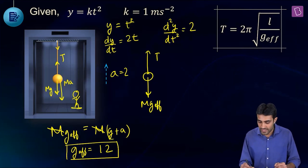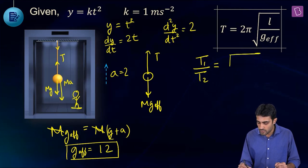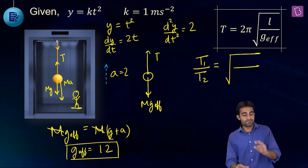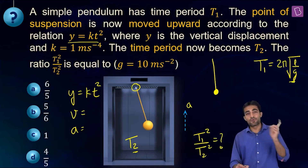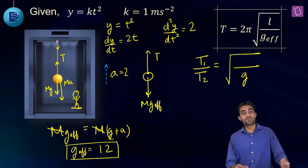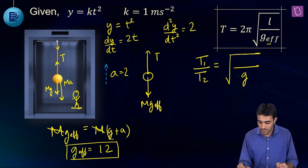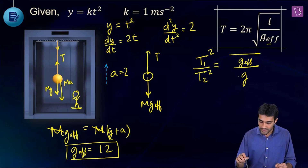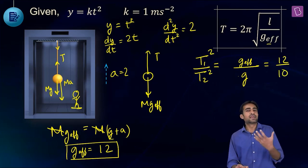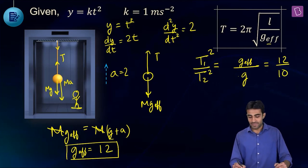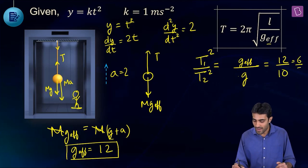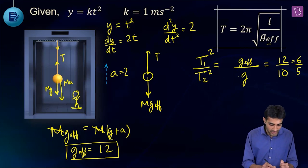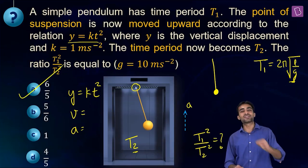Now t1/t2 = √(G_effective/G), so t1²/t2² = G_effective/G = 12/10 = 6/5. Option A is the correct answer.